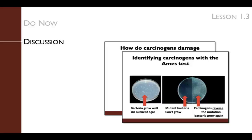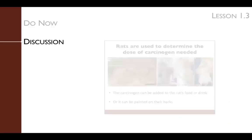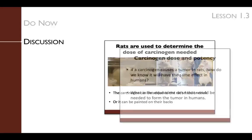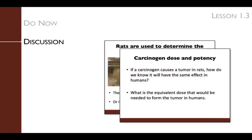But bacteria aren't humans, so we use animal models of cancer to more closely approximate humans. And as the students will discover, the dose and potency of a carcinogen are what really matter, because the dose that causes mutations in bacteria, animals, and humans might be very different.